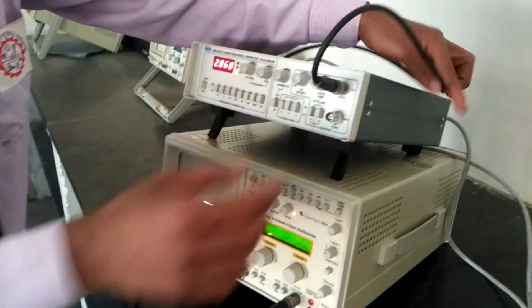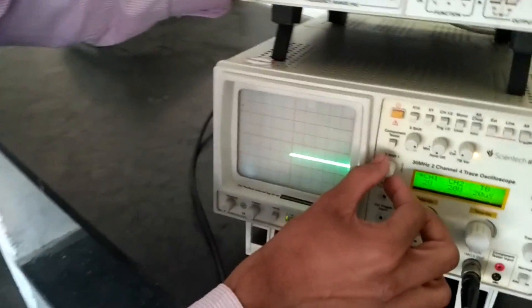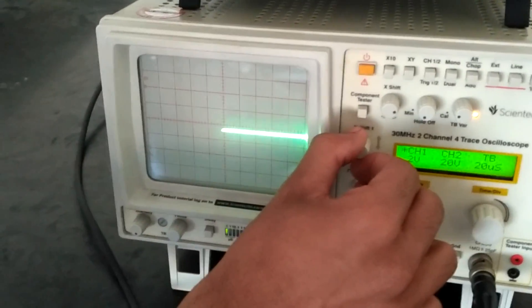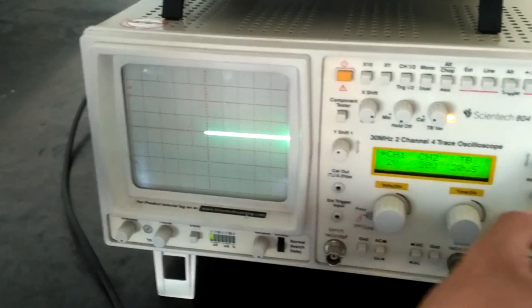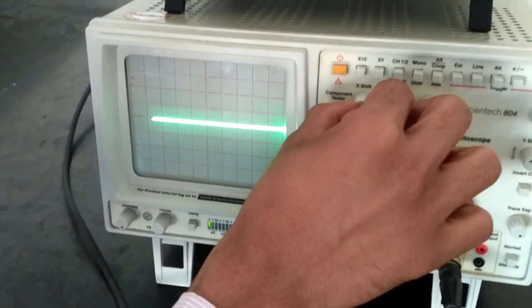We have connected it as shown. We are getting the line. Using Y-shift we can shift this line through the Y-axis, and using X-shift we can shift this line through the X-axis.